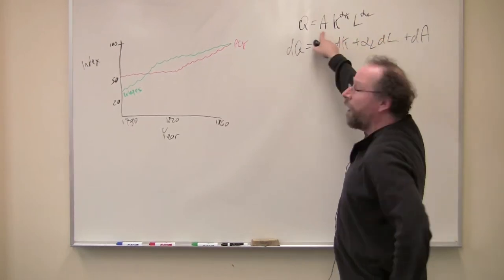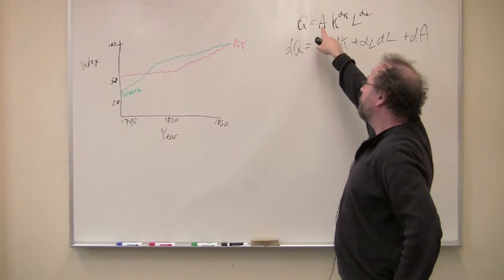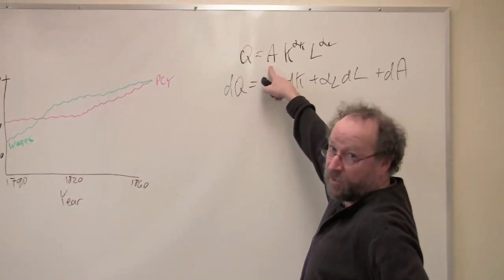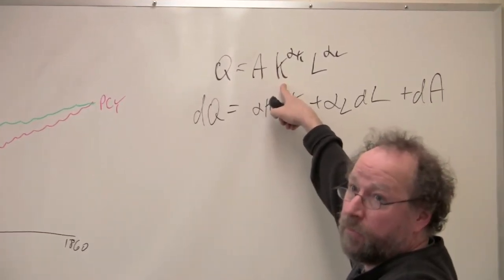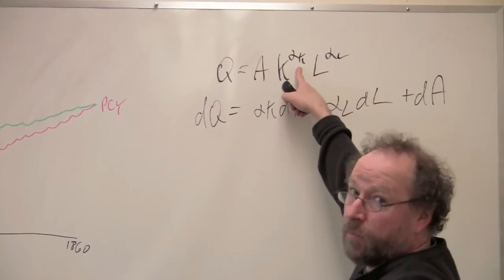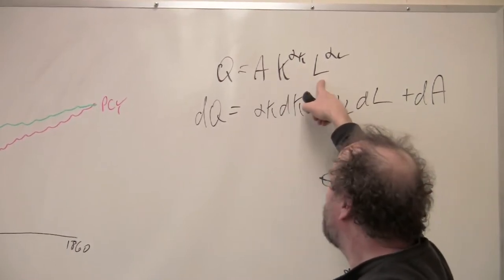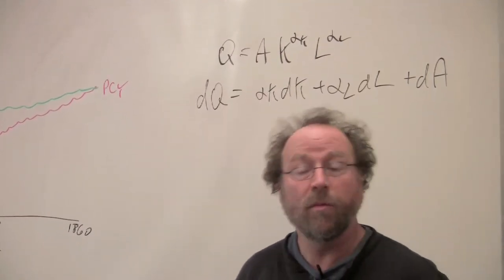Solow starts with what's called the Cobb-Douglas production function, where output relates to some constant, well, it's not a constant, a measure of efficiency, A, times the quantity of capital raised to some exponent, the elasticity of output with respect to capital, and the quantity of labor raised to an exponent, the elasticity of output with respect to labor.